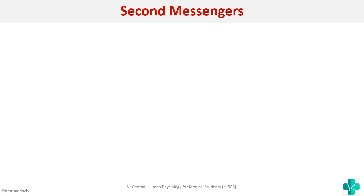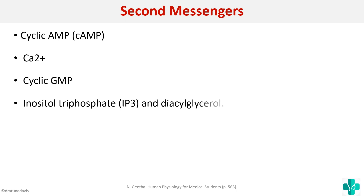Suppose this is a cell and we have got a receptor here. When a hormone binds onto this receptor, there will be a series of enzymatic reactions brought about by mediators known as second messengers. Examples of second messenger systems include cyclic AMP, calcium, cyclic GMP, IP3 (inositol triphosphate), and diacylglycerol.